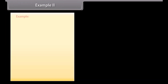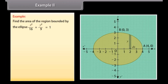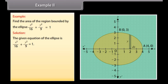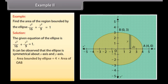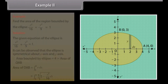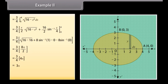Example 2: Find the area of the region bound by the ellipse x²/16 + y²/9 = 1. It can be observed that the ellipse is symmetrical about both the x-axis and y-axis. Therefore, area bound by the ellipse = 4 × area of OAB. Area of OAB = ∫ from 0 to 4 of y dx. By solving it, area of OAB = 3π. Therefore, area bound by the ellipse = 4 × 3π = 12π square units.